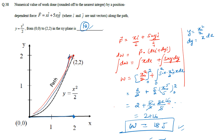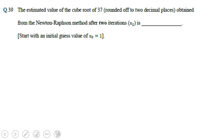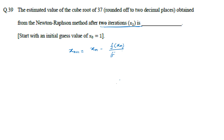Next: the estimated value of the cube root of 37, rounded to two decimal places, using the Newton-Raphson method after two iterations with x₀ = 1. The Newton-Raphson formula is x_{n+1} = x_n − f(x_n)/f'(x_n). We define f(x) = x³ − 37, so f'(x) = 3x².